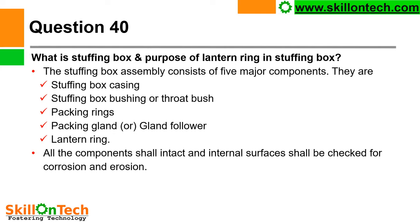What is the stuffing box and the purpose of the lantern ring in the stuffing box? The stuffing box assembly consists of five major components: stuffing box casing, stuffing box bushing or throat bush, packing rings, packing gland or gland follower, and lantern ring. All components shall be intact and internal surfaces shall be checked for corrosion and erosion. We shall see the picture of the stuffing box in the next slide.